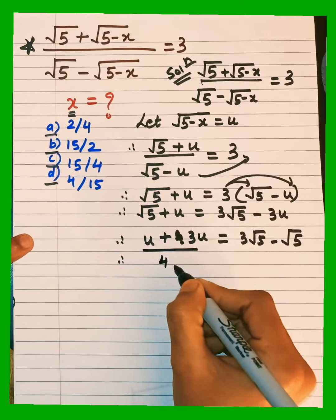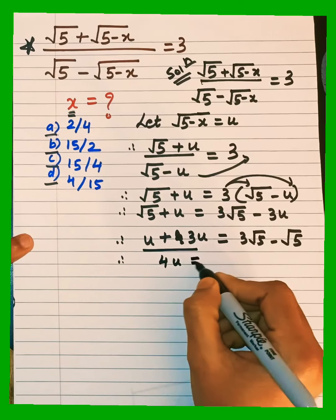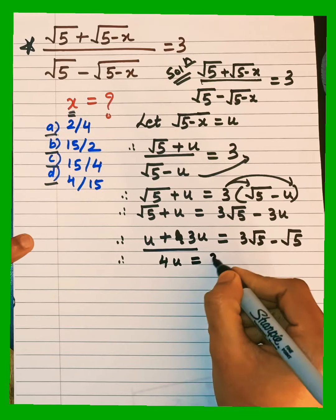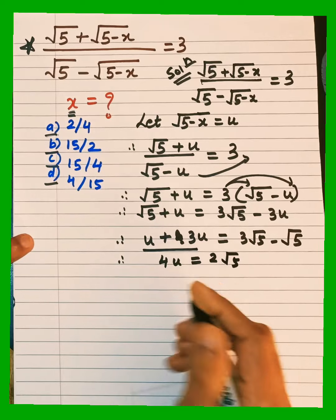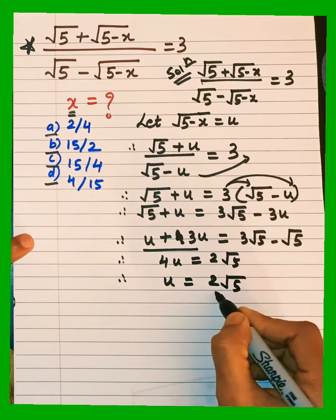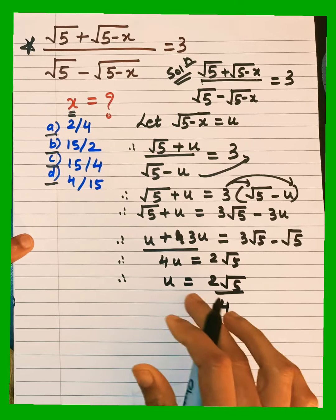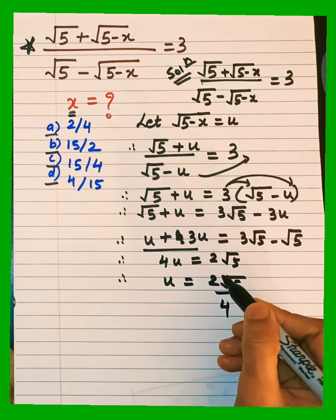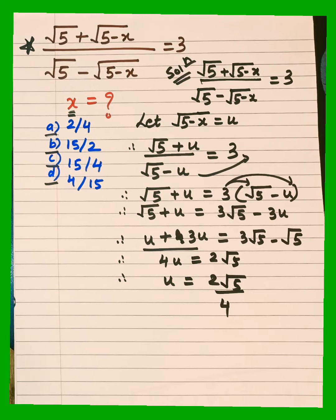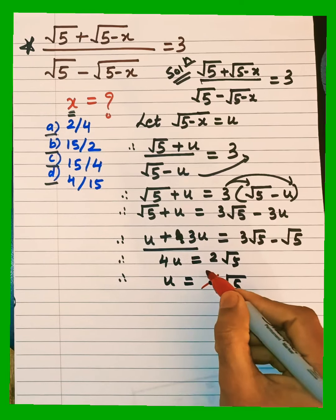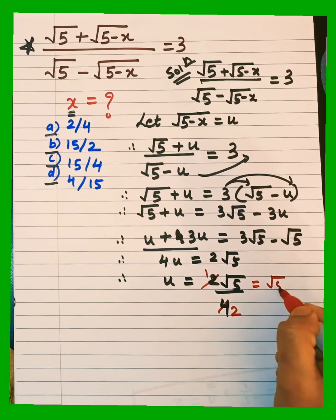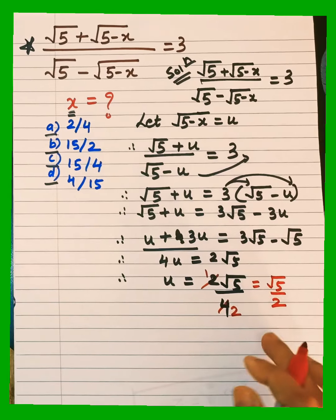Collecting like terms: u + 3u on the left gives 4u, and 3√5 − √5 on the right gives 2√5. So 4u = 2√5. Shifting 4 to the denominator: u = 2√5 / 4. Cancelling the 2s, we get u = √5 / 2.